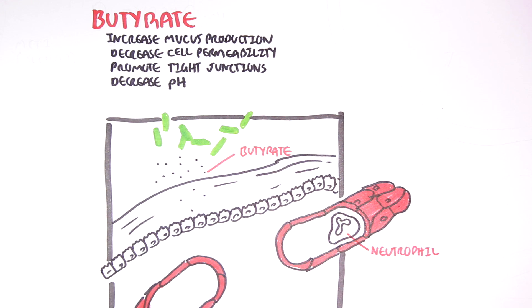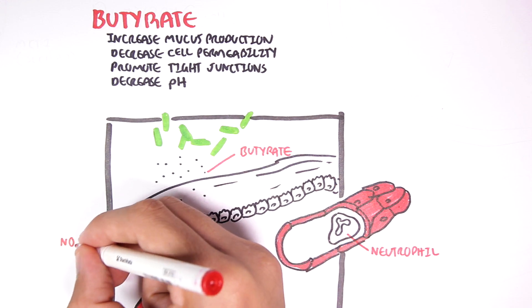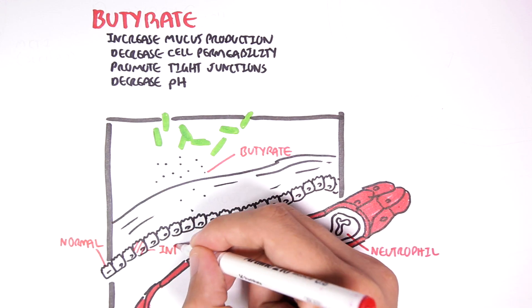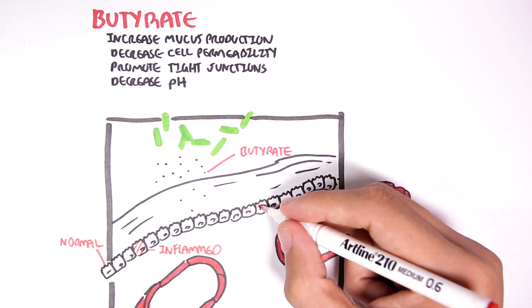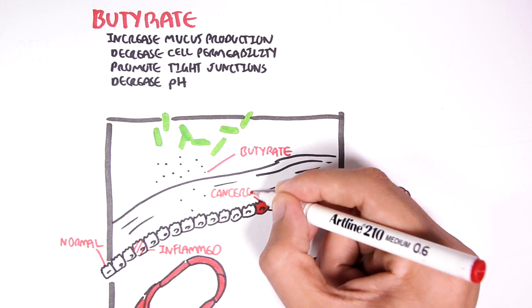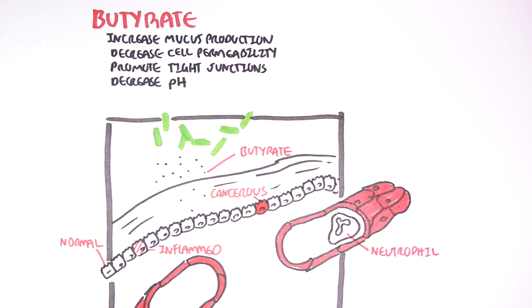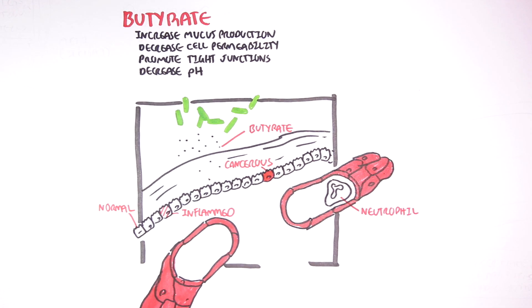Of course, butyrate does more than this according to the literature. We will focus in more detail on the effects butyrate has on four specific types of cells: a normal colon cell, an inflamed colon cell, a cancerous colon cell, and the neutrophil.